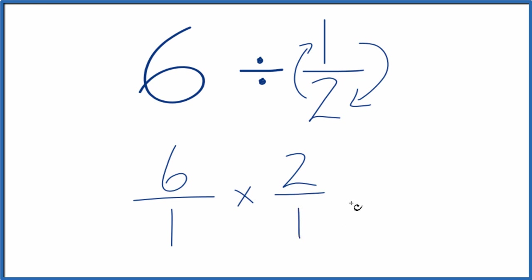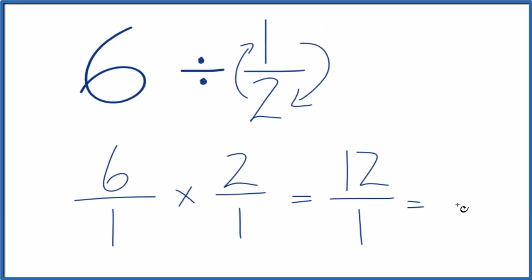6 times 2 over 1, that equals 6 times 2 is 12 over 1. That gives us 12.